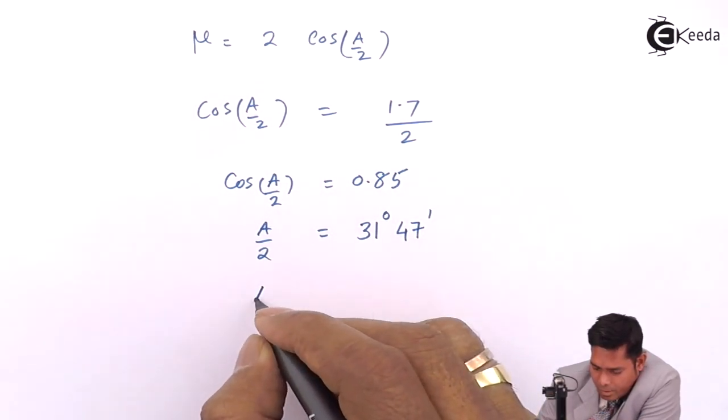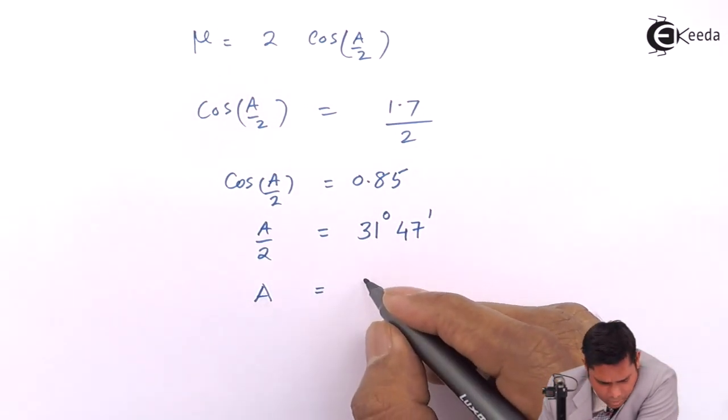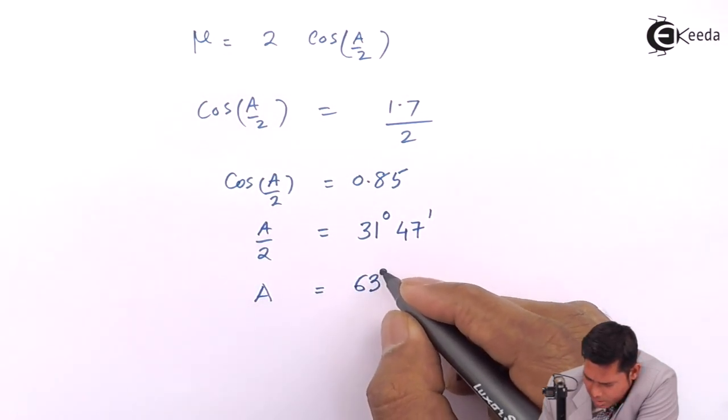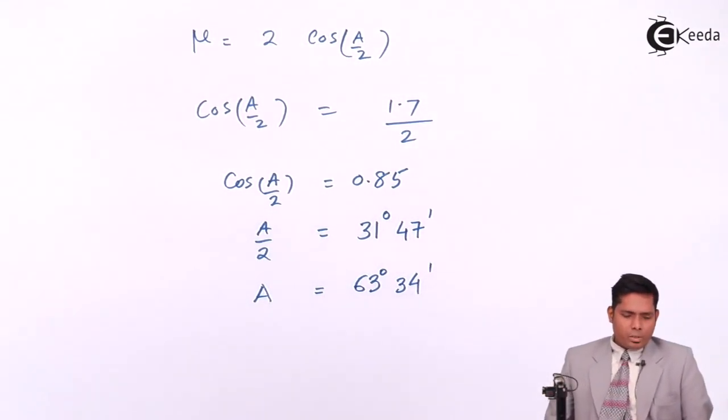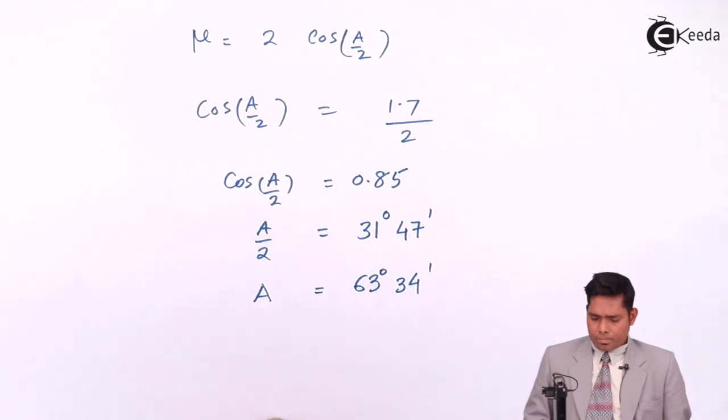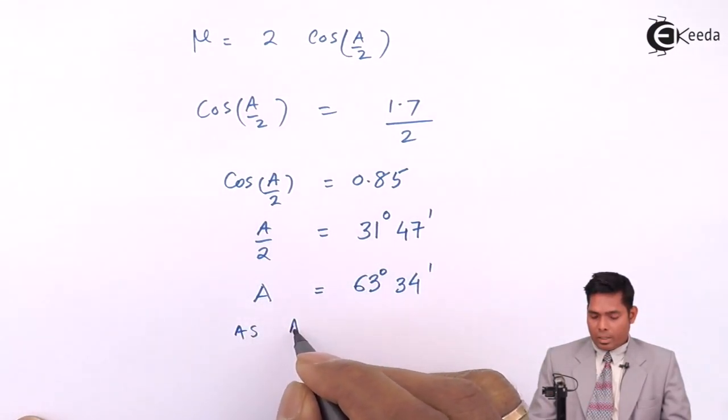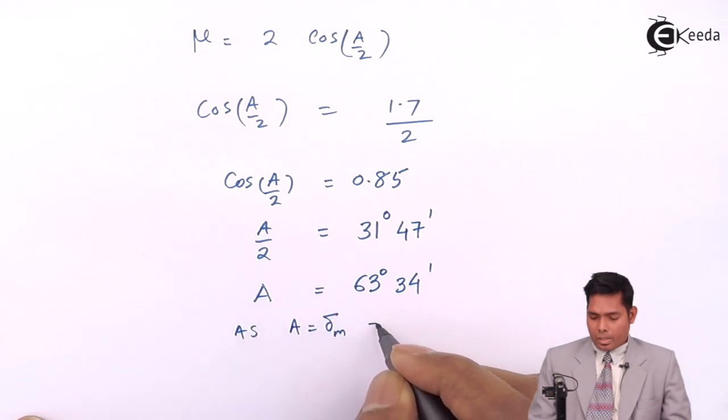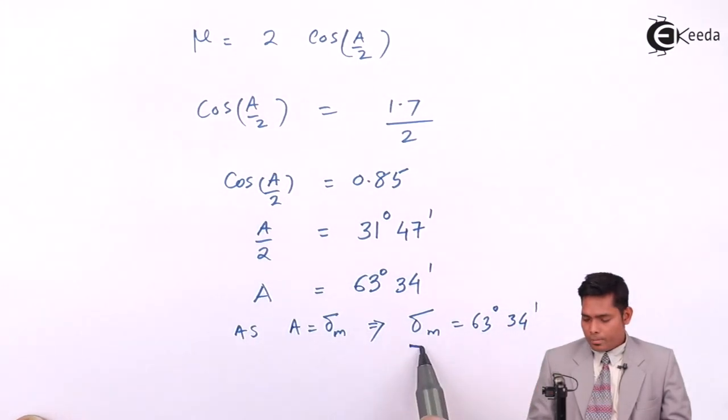Now from here A is 63 degrees and 34 minutes. So we got the value of A, the angle of prism. Now we can get the value of minimum deviation as well, because it's given in the question that A is equal to Delta M.